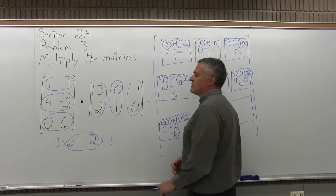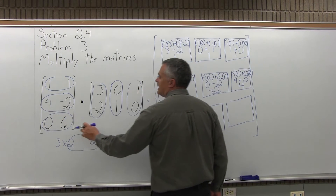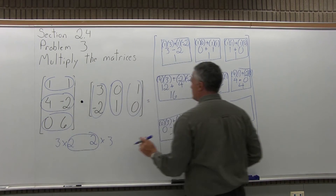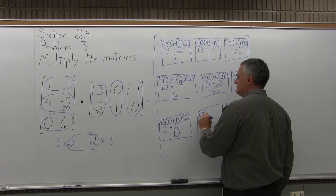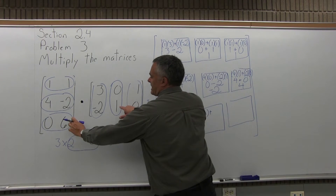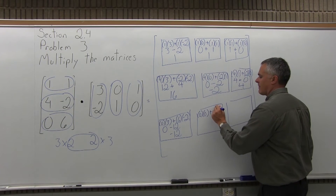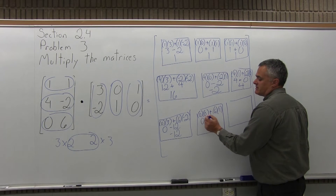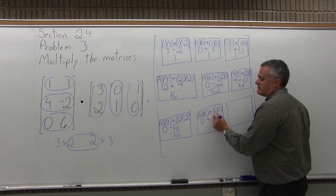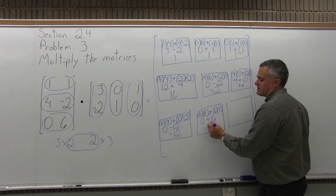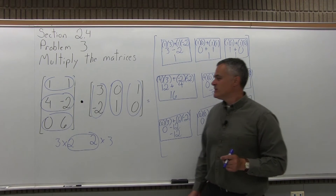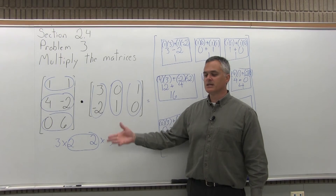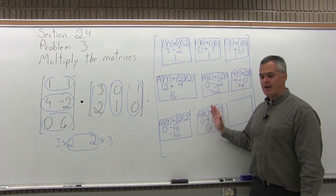Next, I do the bottom row, 0, 6, times the middle column, 0, 1, of the second matrix. First times first is 0 times 0, and second times second is 6 times 1. So 0 times 0 is 0, and 6 times 1 is 6. When you add 0 plus 6 you get 6. We multiplied the bottom row of the first matrix times the middle column of the second, and that answer goes in the bottom row and middle column.